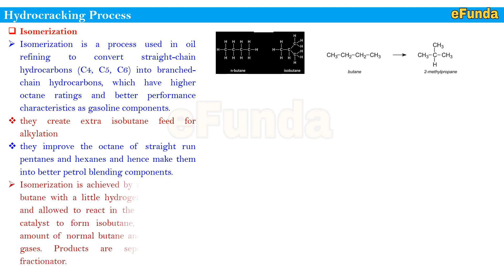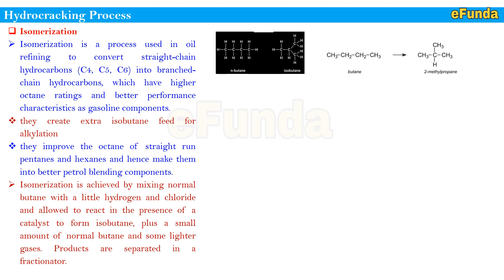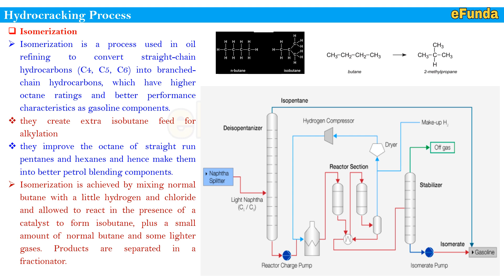Isomerization is achieved by mixing normal butane with a little hydrogen and chloride, allowing them to react in the presence of a catalyst to form isobutane, plus a small amount of normal butane and lighter gases. The products are separated in a fractionator — lighter gases are used as refinery fuel and butane is recycled as feed. Pentanes and hexanes are lighter components of petrol. One can refer to the picture where the isomerization process is shown starting from the naphtha splitter, feeding lighter naphtha (C5 to C6 compounds) forward.